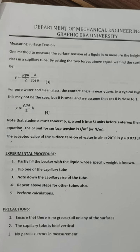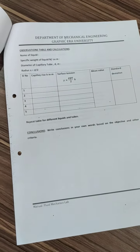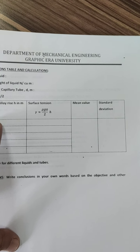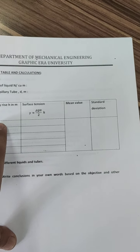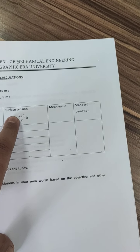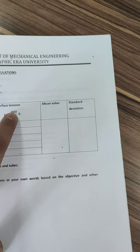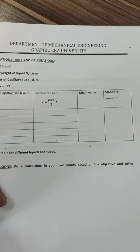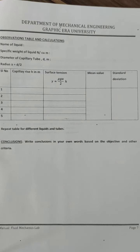In the observation table, the first column is for capillary rise h in meters, observed from the experiment. The surface tension formula is gamma equals rho times g times a divided by 2, multiplied by h, where rho is the density, g is 9.81, and a is the cross-sectional area corresponding to the tube diameter. For example, a 2 mm diameter tube gives a specific area multiplied by h. By using different tubes we measure the surface tension and finally take the mean value. This is the first experiment, thank you.